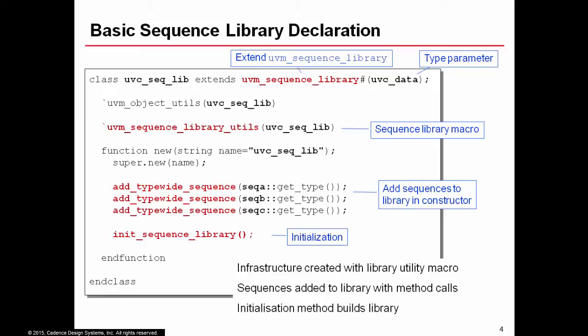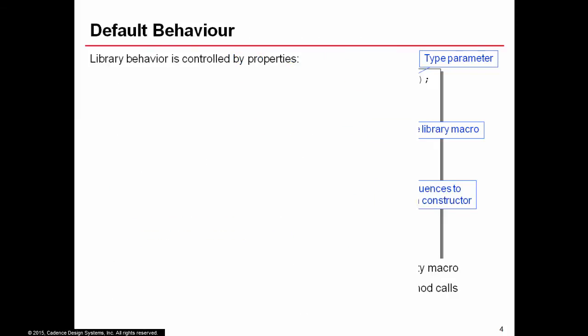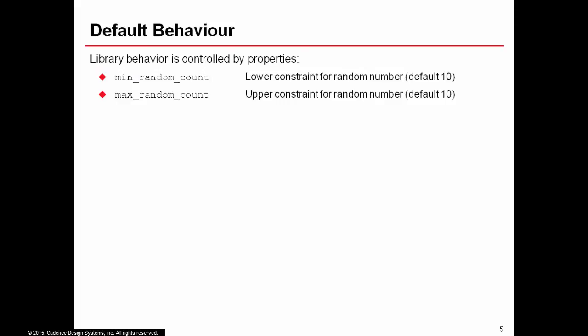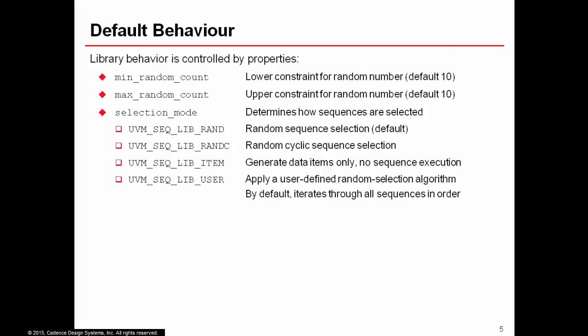The behavior of the library is controlled by some properties. There are two properties — min_random_count and max_random_count — which define the upper and lower constraint for the random number of sequences from the library that will be executed. By default, both of these values are 10.